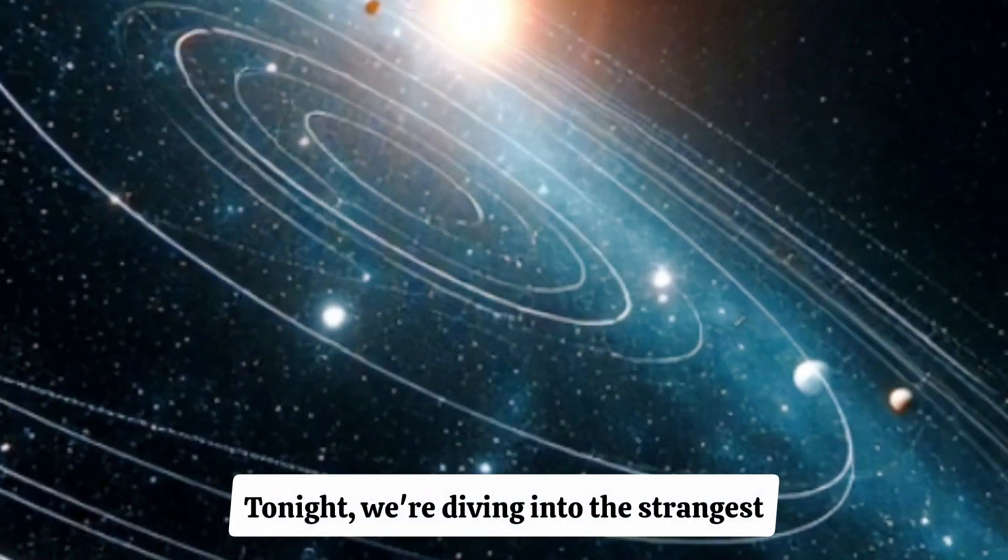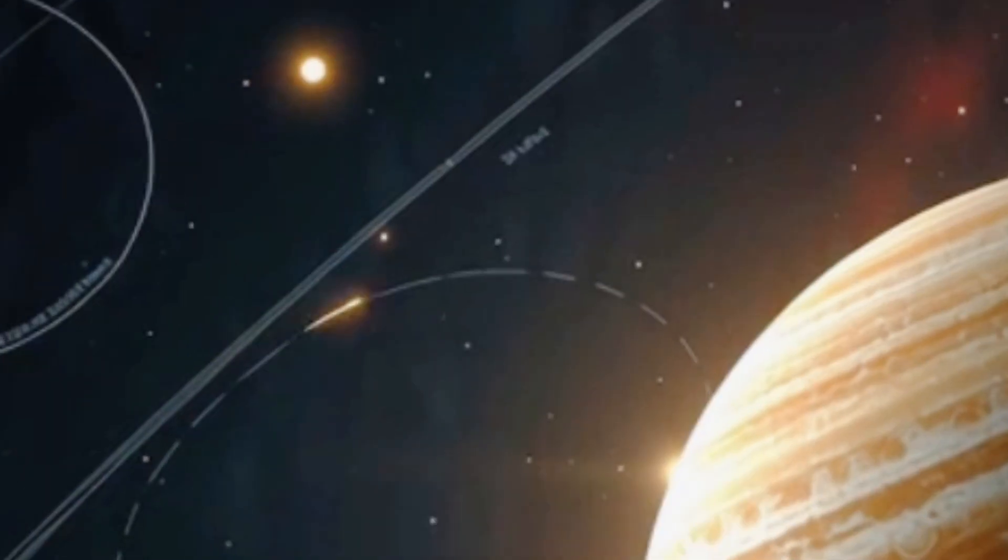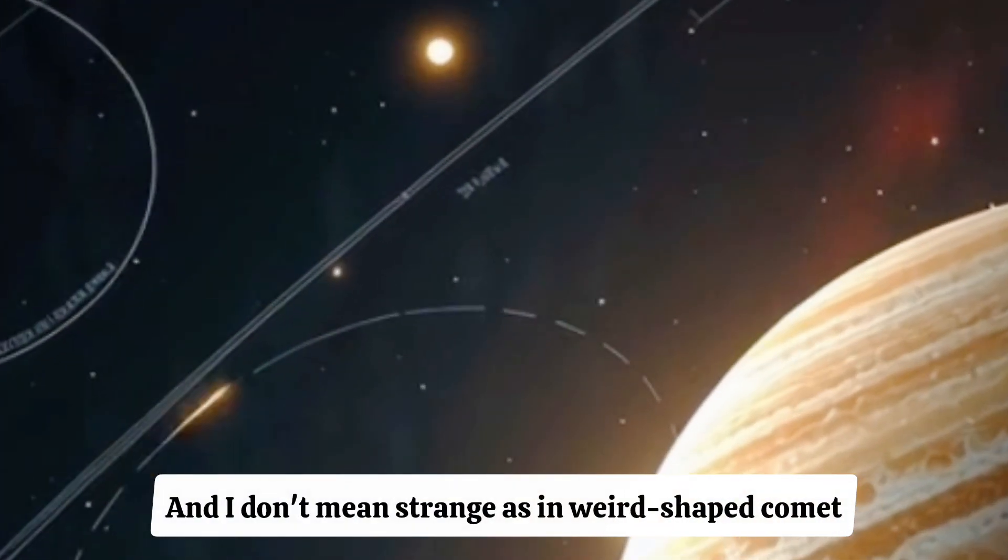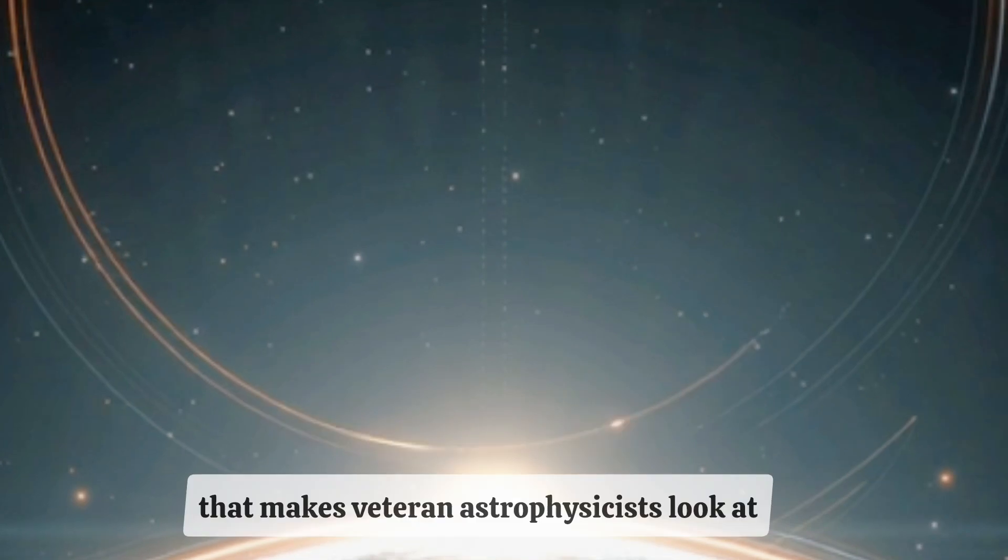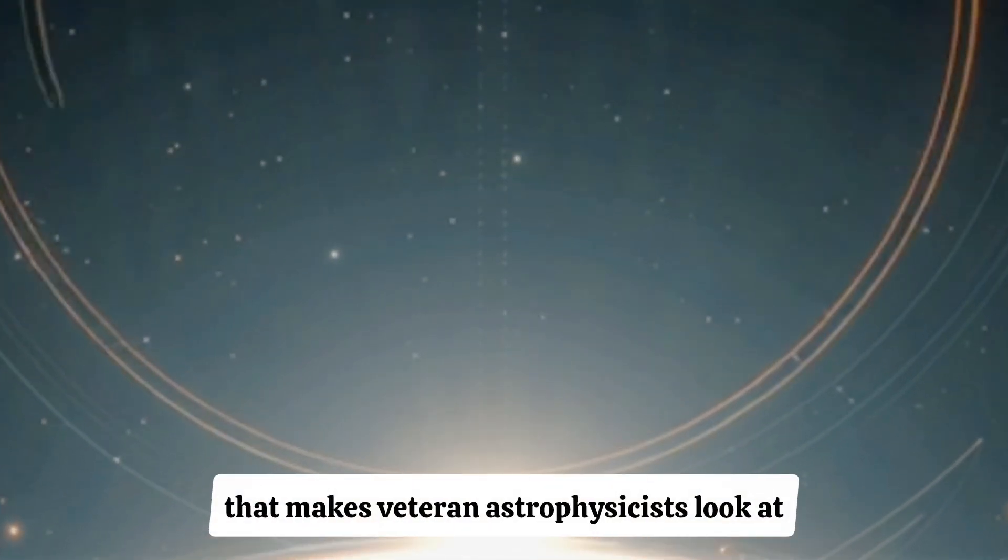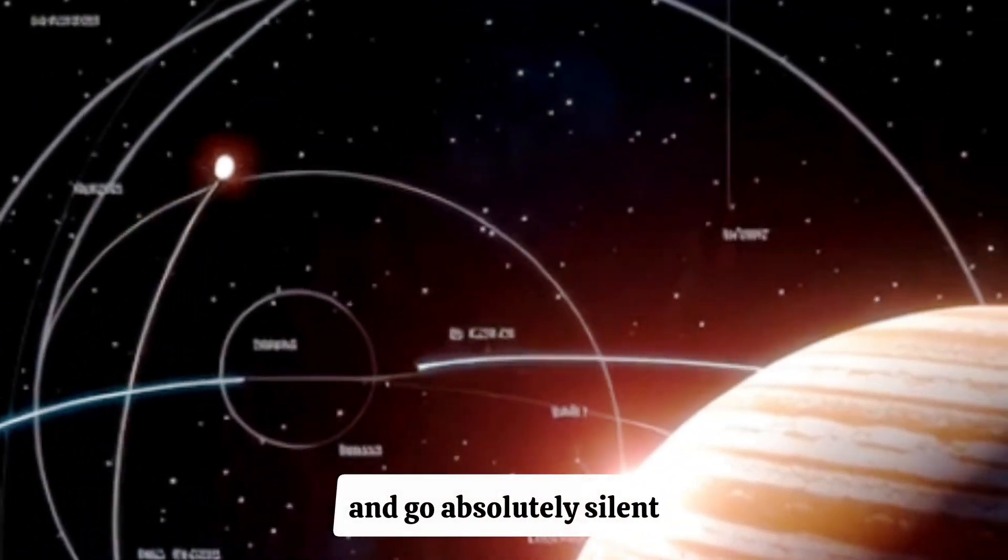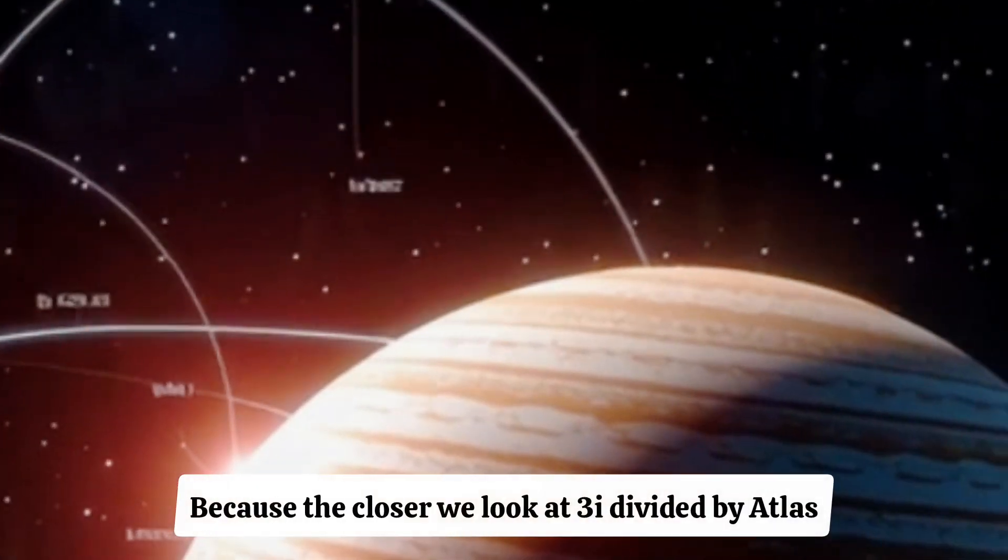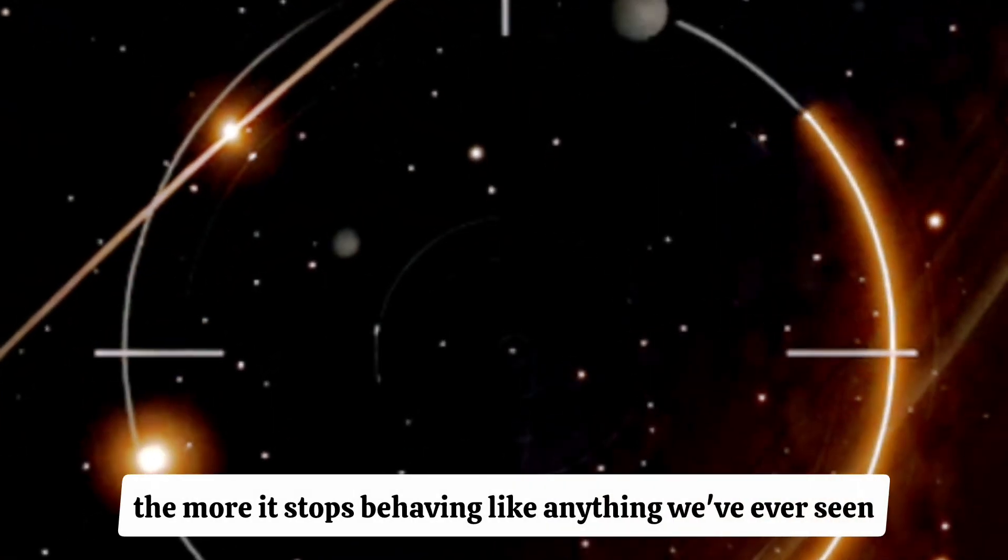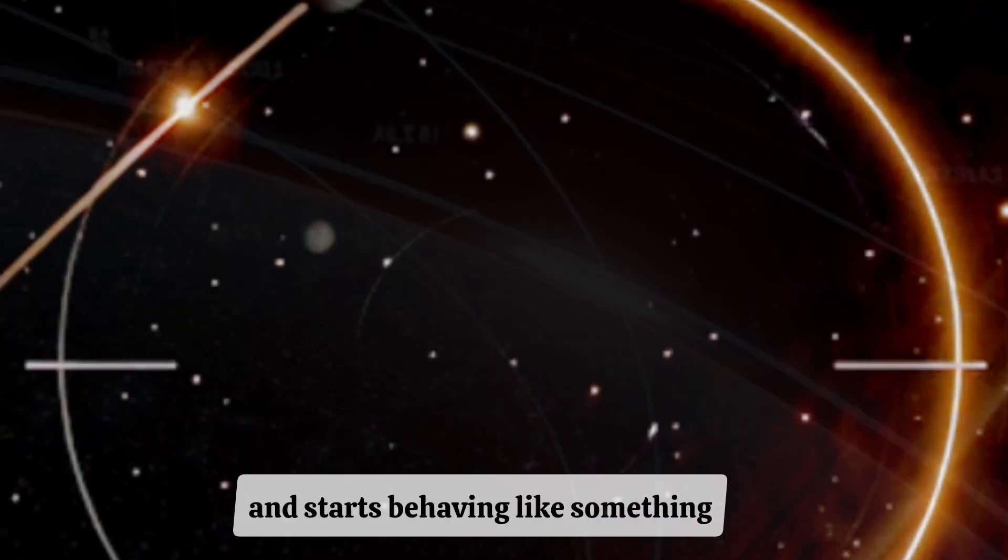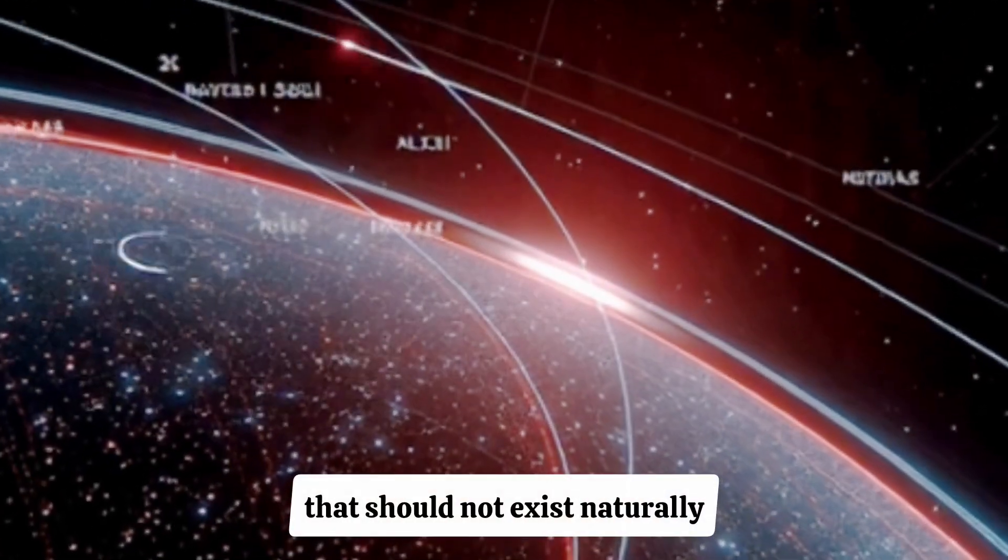Tonight, we're diving into the strangest astronomical mystery of the decade. And I don't mean strange as in weird-shaped comet or unusual orbit. I mean strange in a way that makes veteran astrophysicists look at their computer screens and go absolutely silent. Because the closer we look at 3i divided by Atlas, the more it stops behaving like anything we've ever seen and starts behaving like something that should not exist naturally.